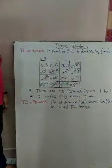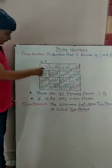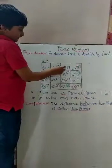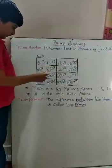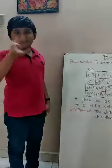3 and 5 is called twin primes. They are 5 and 7, 11 and 13, 17 and 19, 29 and 31, 41 and 43, 59 and 61, 71 and 73. Okay, bye friends.